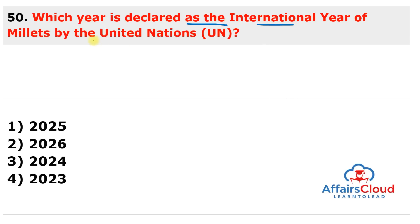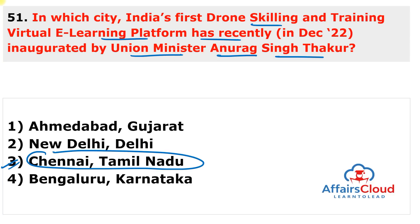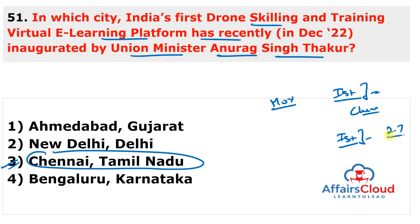Question 50: Which year is declared as the International Year of Millets by the United Nations? The answer is 2023. Question 51: In which city was India's first drone skilling and training virtual e-learning platform inaugurated by Union Minister Anurag Singh Thakur? The answer is Chennai, Tamil Nadu. The Meghalaya government, in partnership with startup Tech Eagle, also unveiled the Meghalaya Drone Delivery Network and Hub — Asia's first drone delivery hub — aimed at providing universal healthcare access to 2.7 million people in Meghalaya.